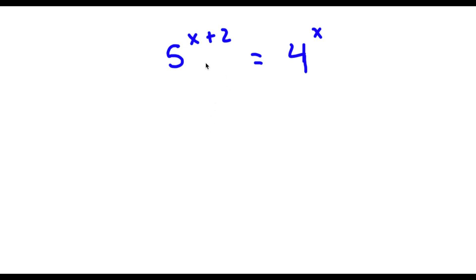Alright, so I have 5 to the power of x plus 2 is equal to 4 to the power of x. So the first thing I'm going to do is I'm going to take the ln on both sides, or natural log.